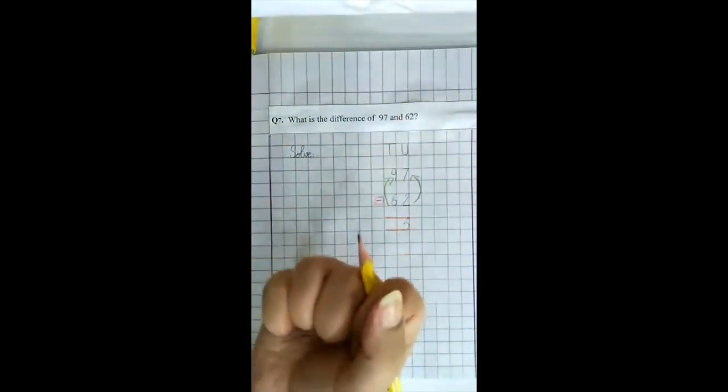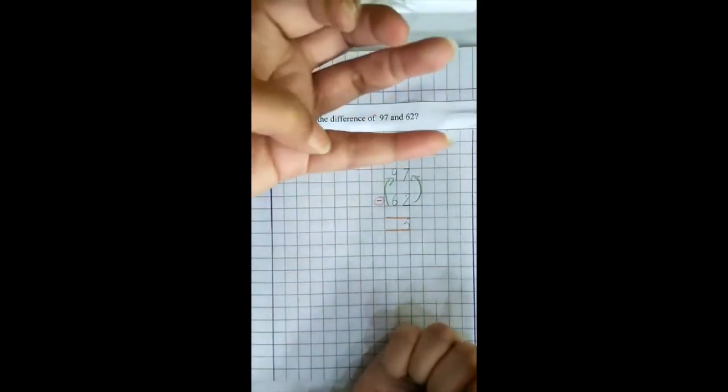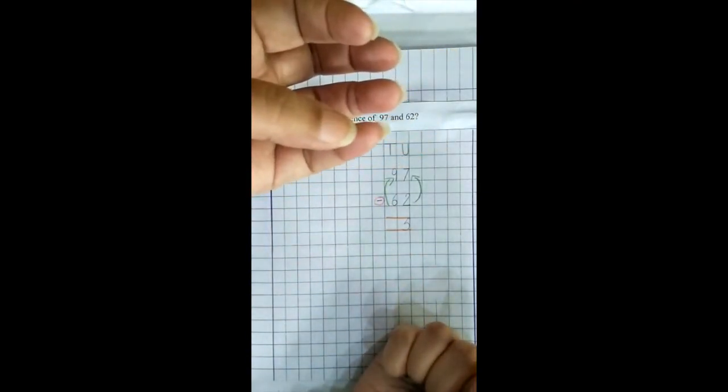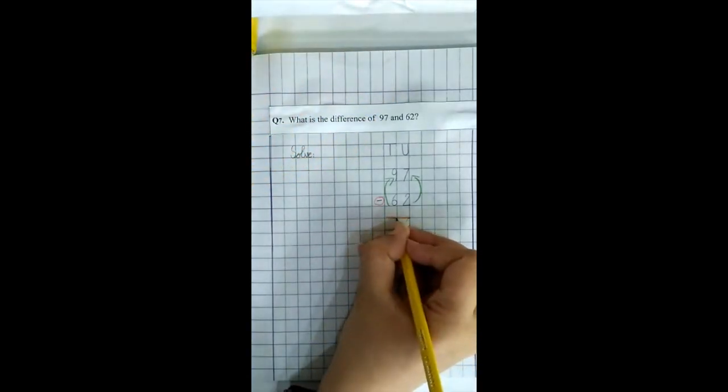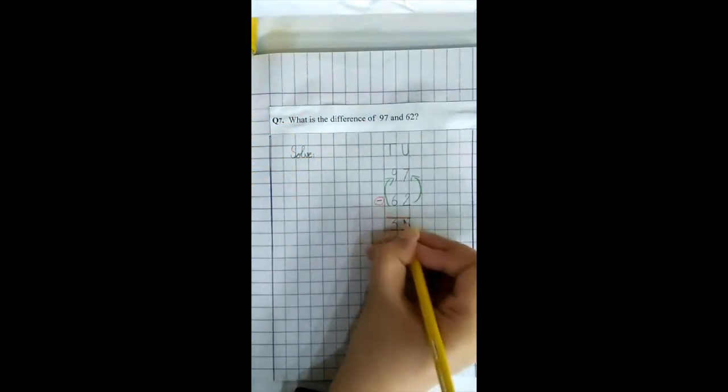Six کو ہم نے اپنے right hand میں catch کیا. Seven, eight, nine. Which is the position? And what is the answer? Three. So we write here three. Answer is thirty-five.